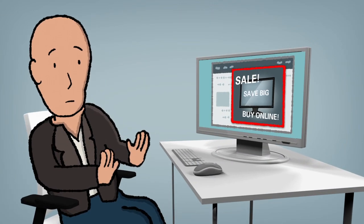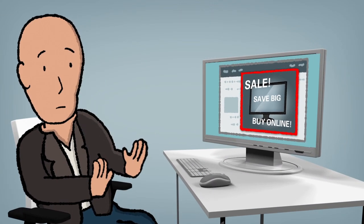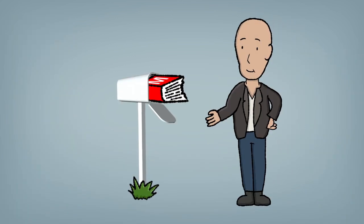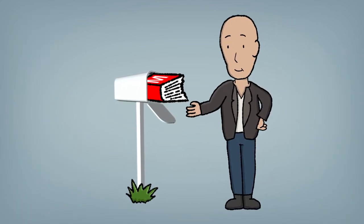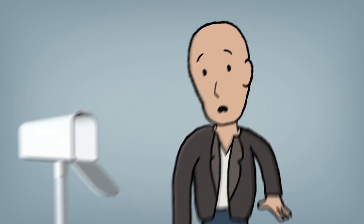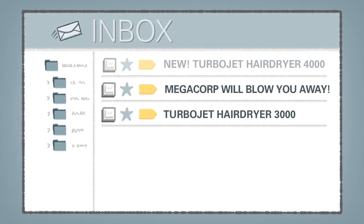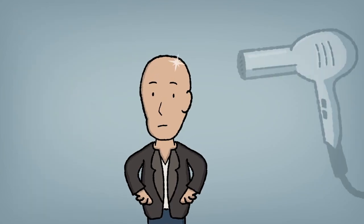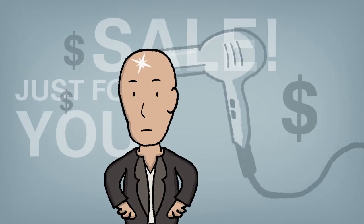First, Archie began seeing display ads everywhere for Megacorp TVs. Then he received a 3,000-page Megacorp mega-catalog in the mail. And worst of all, he got multiple emails touting the power of Megacorp hair dryers, which, as a follicly-challenged individual, he clearly didn't need.